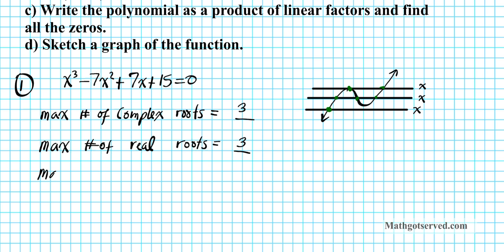Now the maximum number of turns, or changes in direction, is always one unit less than the maximum number of complex roots, or one unit less than the degree. So the degree is three, so the maximum number of turns is two. As you can see here, this is the first turn right here, and then this is the second turn. So you look at the degree and subtract one from it — that tells you the maximum number of turns or changes in direction for the graph of the function.